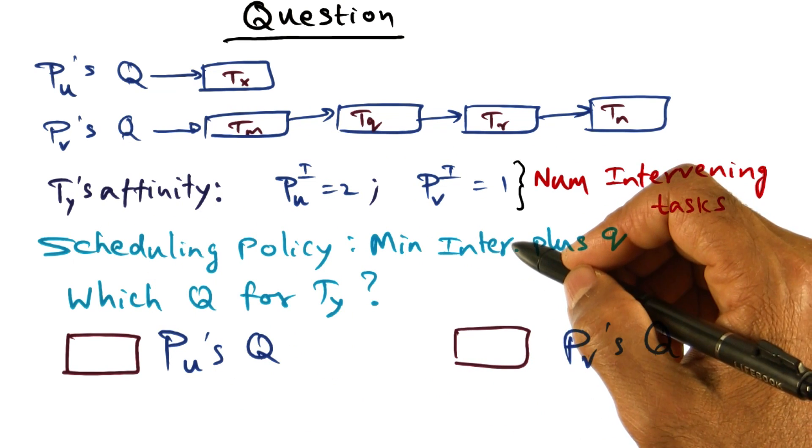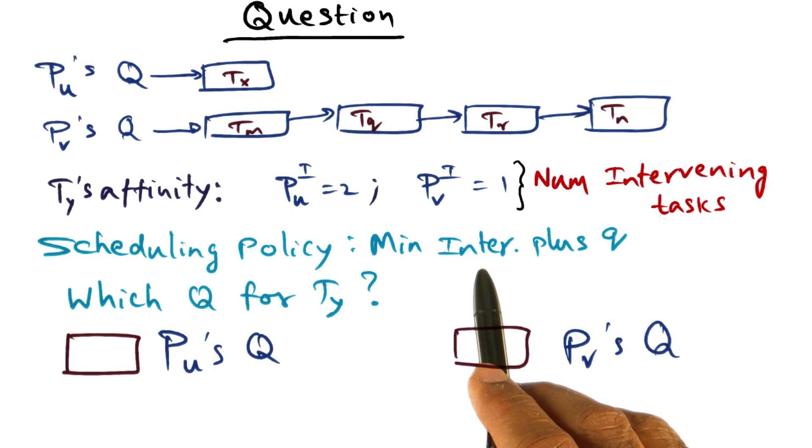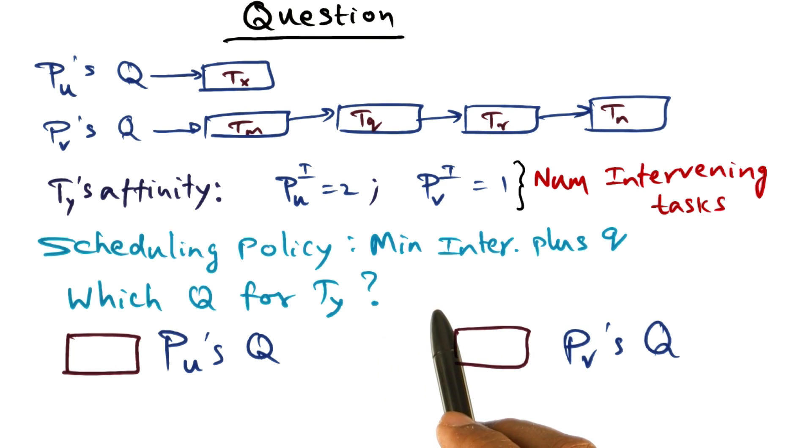And the scheduling policy we're going to pick is the minimum intervening plus Q. That's the scheduling policy that we're going to pick.